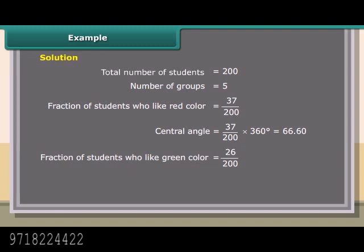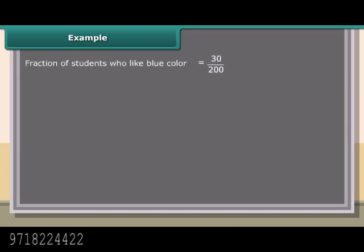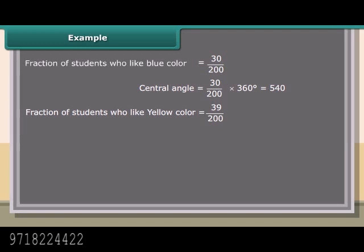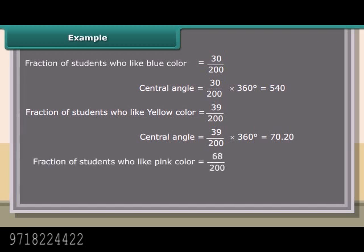Fraction of students who like blue color = 30/200, Central angle = 54 degrees. Fraction of students who like yellow color = 39/200, Central angle = (39/200) × 360 degrees = 70.20 degrees. Fraction of students who like pink color = 68/200, Central angle = (68/200) × 360 degrees = 122.40 degrees.